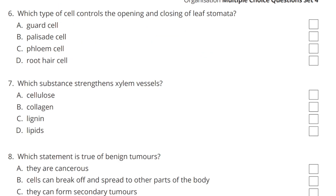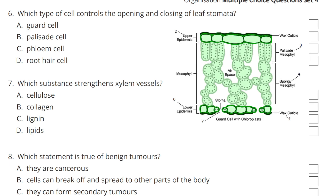Question 6. Which type of cell controls the opening and closing of the leaf stomata? These are the guard cells.